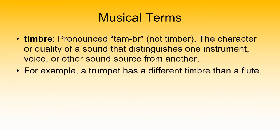One last musical term for now: timbre. Note it looks like it might be pronounced 'timber,' but that refers to lumber — that's not this term at all. Timbre refers to the character or quality of sound that allows you to distinguish one instrument — or even one voice — from another. For example, if you listen to a trumpet and then a flute, they're two entirely different sounds. That quality of sound is what we mean when talking about the timbre of an instrument. Those are the musical terms that help us describe and define music.